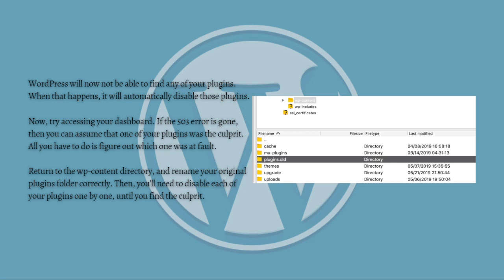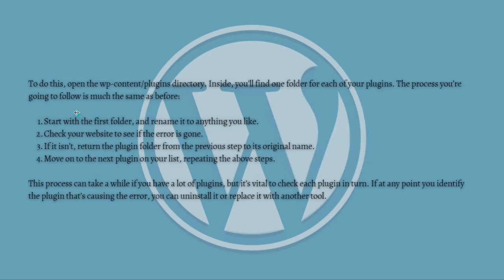All you have to do is figure out which plugin was at fault. Return to the wp-content directory and rename your original plugins folder back to its correct name. You'll then need to disable each of your plugins one by one until you find the culprit. To do this, open the plugins directory — inside you'll find one folder for each of your plugins.